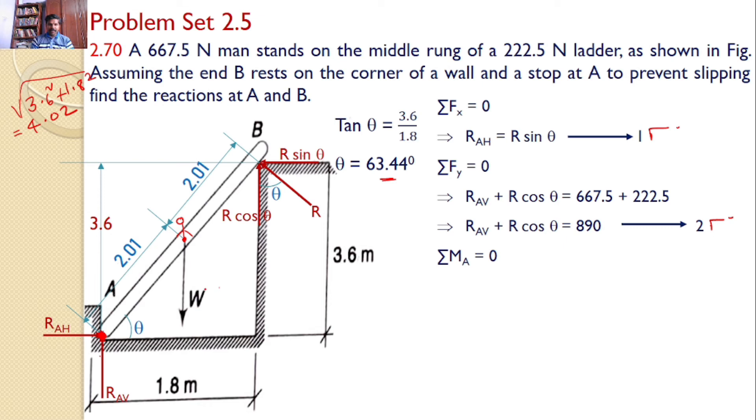Similarly, the perpendicular distance between W and A: this is the line of action of W. This distance can be considered as 2.01 cos 63.44 degrees, by considering this right angle triangle. This distance becomes 2.01 cos 63.44.